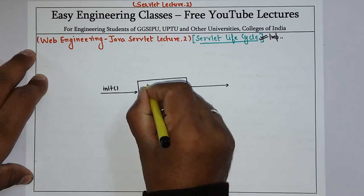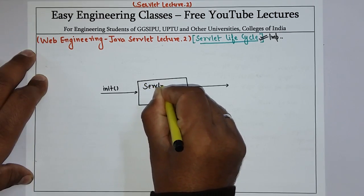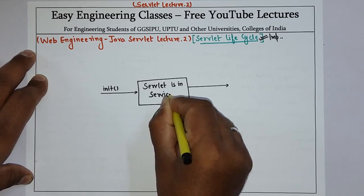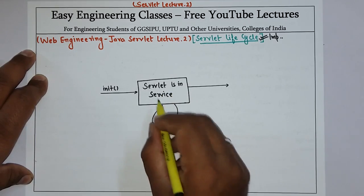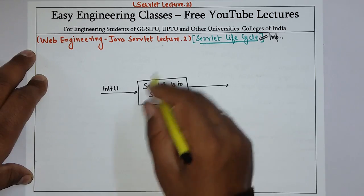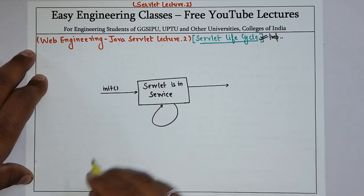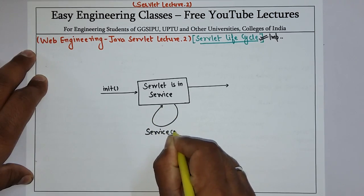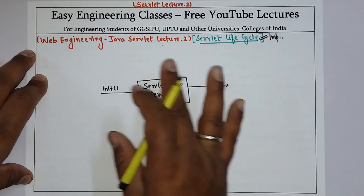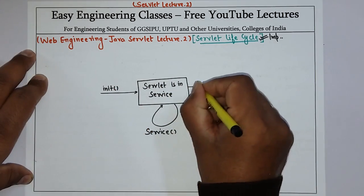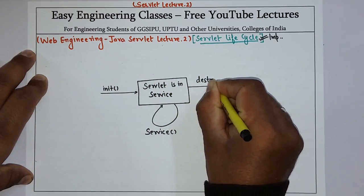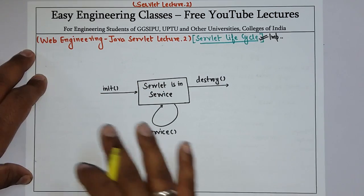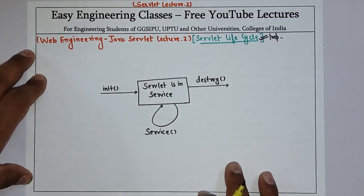Then the servlet is in service — that is the servlet is working — and you can see there is a loop because a servlet can be invoked many times. That is why the loop is there. This stage is called the service stage and it is the most important stage of any servlet life cycle. Then once the work of the servlet is done, the last stage is destroy. So that is your servlet life cycle. Now we will see each of these stages in detail.